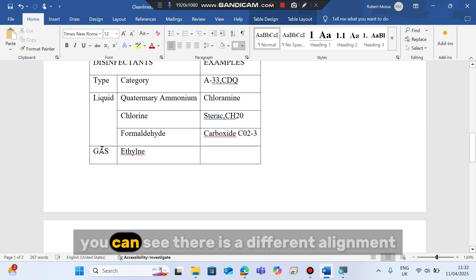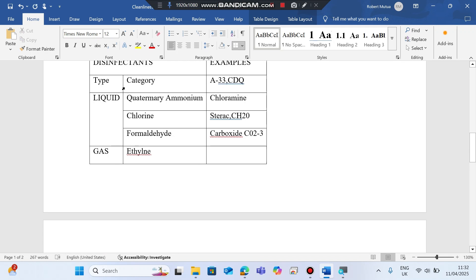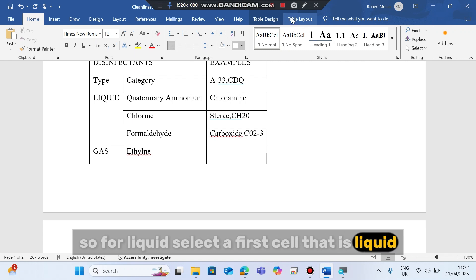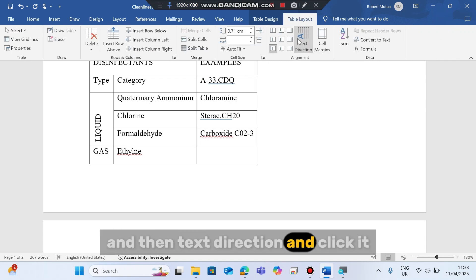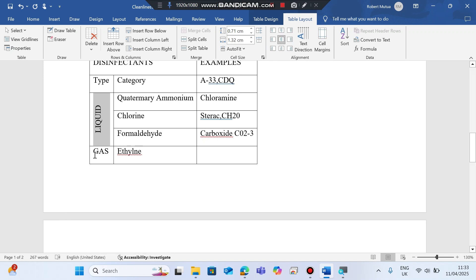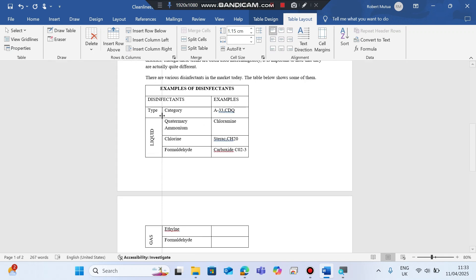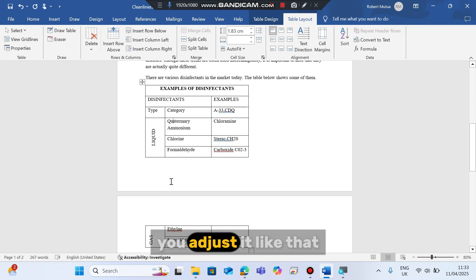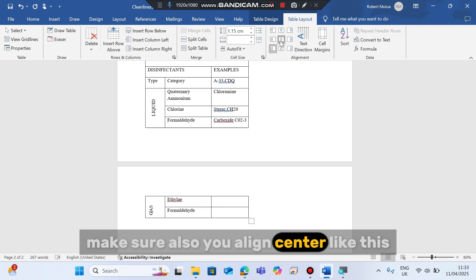Then for the gas and liquid, you can see there is a different alignment. So for liquid, select the first cell, that is liquid. Go to table layout and then text direction. Click it and then make sure you also align center. For the gas, you do the same. Click gas, text direction, adjust it like that. Then for the gas, make sure also you align center like this.